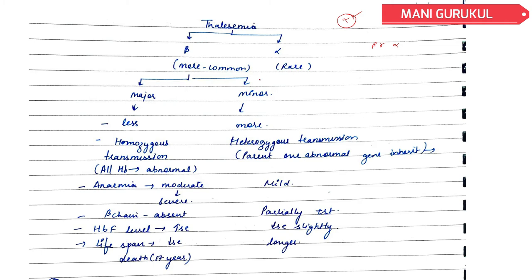Beta Thalassemia is of 2 types: Major and Minor. Major is less common and Minor is more common. Major is homozygous and Minor is heterozygous, meaning in Major one parent has abnormal genes inherited — all hemoglobin is abnormal — and anemia is moderate to severe. In Minor it is mild. In Major, the beta chain is completely absent; in Minor it is partially present. In Major, fetal hemoglobin level is more. Lifespan decreases significantly — the person has a very short life, and in Thalassemia Major most people die by 17 years.